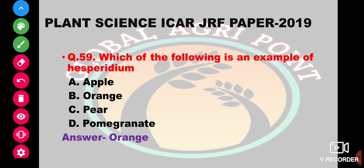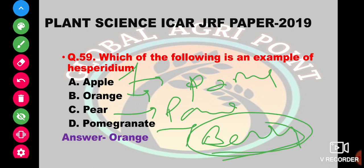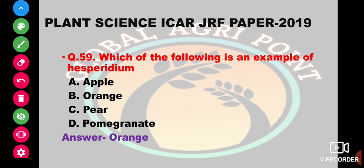Which of the following is an example of Hesperidium? Hesperidium is a type of fruit. Apple is a pome type, pear is a pome type, orange is a Hesperidium type, and pomegranate is a modified berry type. So the answer is orange.